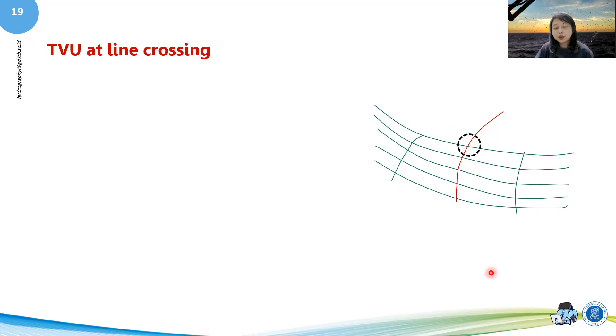If we zoom into this line crossing, we can see that there are four points that are the closest to each other. We want to know how trusting we are to this line crossing.